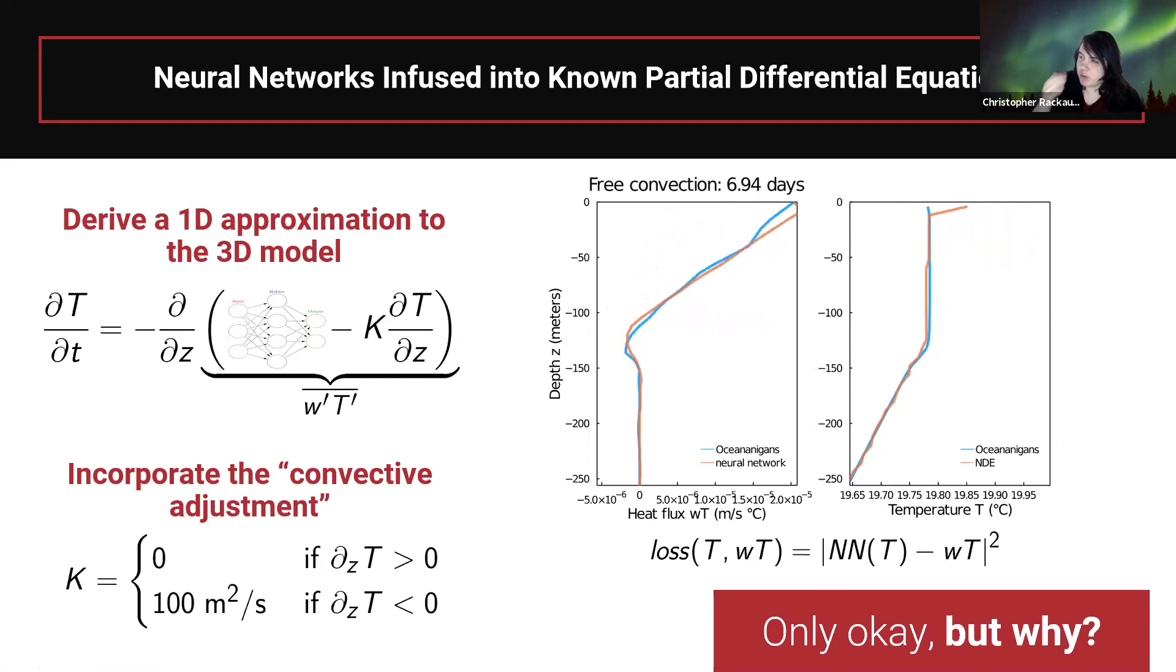So you can start to say a neural network is a universal function approximator. Let's have that capture the things that we've captured a lot of the physics in the convective adjustment, but there are some physics we haven't captured. So now here's our full knowledge embedded form with a neural network in there. It works okay if you then just say I have a neural network in the flux term, so let me just train the neural network to match the missing fluxes, but it doesn't tend to work all that well.